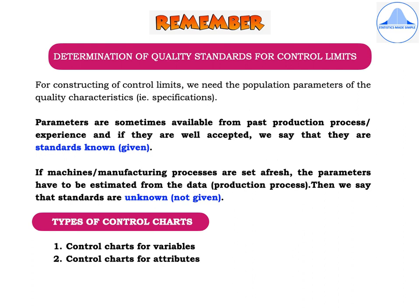There are certain points to be remembered when constructing control limits. We first need the population parameters of the quality characteristics, which are the specifications. Parameters are sometimes available from past production processes or experience; if well accepted, we say the standards are known or given. If machines or manufacturing processes are set afresh, the parameters must be estimated from production data — then the standards are unknown or not given. There are two types of control charts: for variables and for attributes.